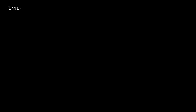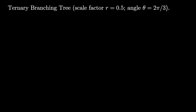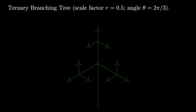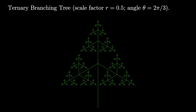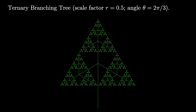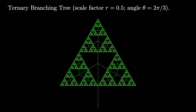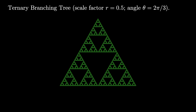For our next construction, we iteratively build a ternary branching tree. To do this, we start with a line of unit length and apply three transformations. Each transformation scales by 0.5 and rotates by a multiple of 2π over 3. Then we apply these transformations again to the branches, and repeat this as many times as we need, always applying the three transformations to the branches. At the end, if we remove all of the branches along the way, the resulting set of leaves will look like the Sierpinski triangle.